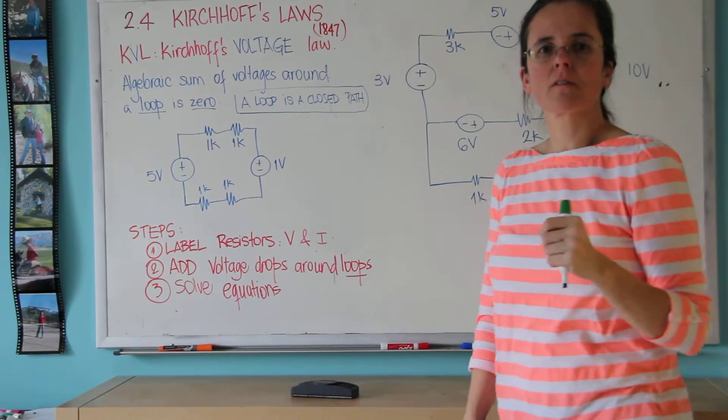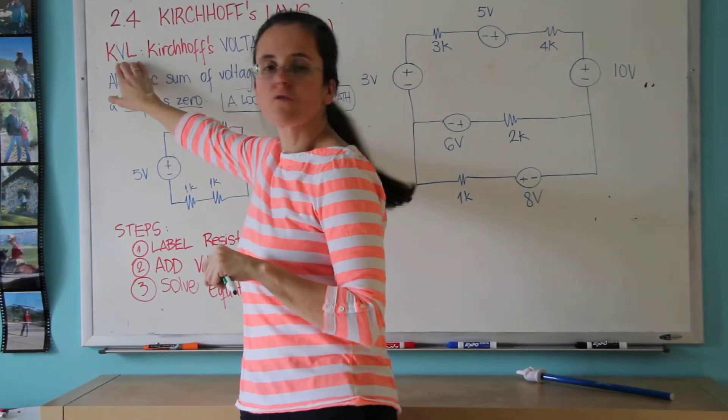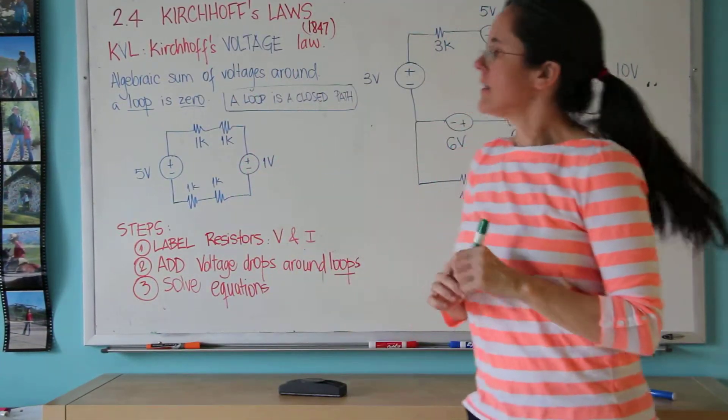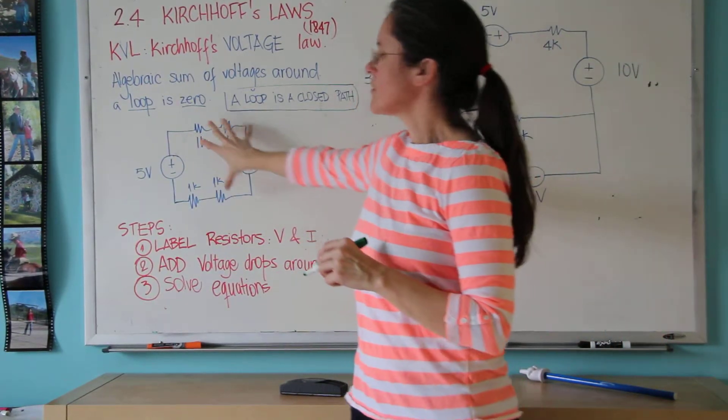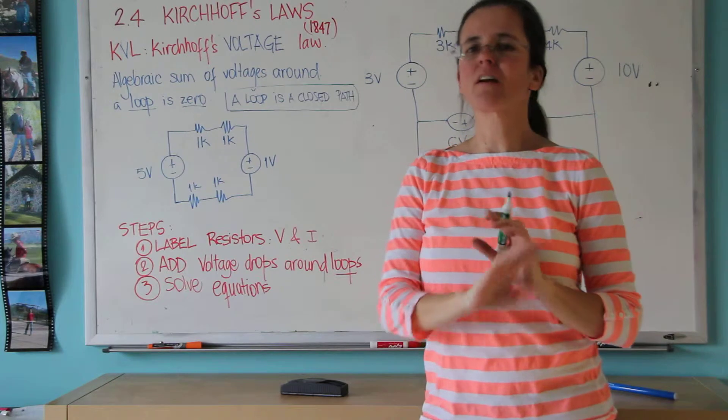Okay, so the second part of Kirchhoff's law is KVL, Kirchhoff's voltage law. Basically, if you go around a loop - a loop means a closed path - and you add up all the voltages, it has to add up to zero.